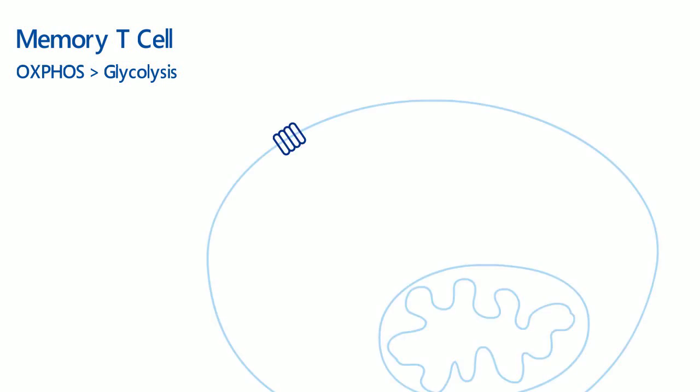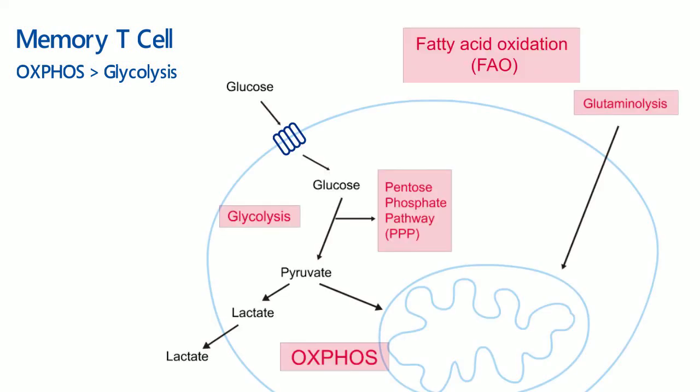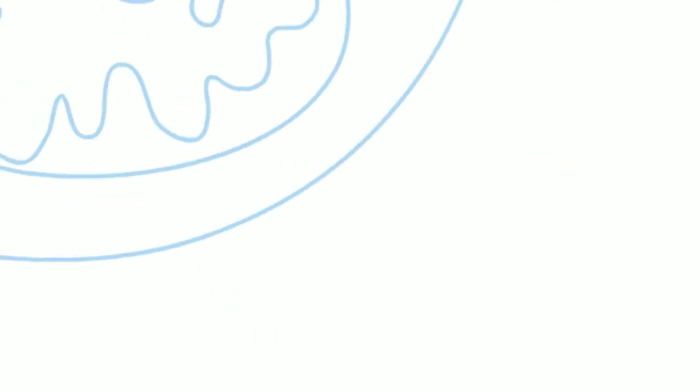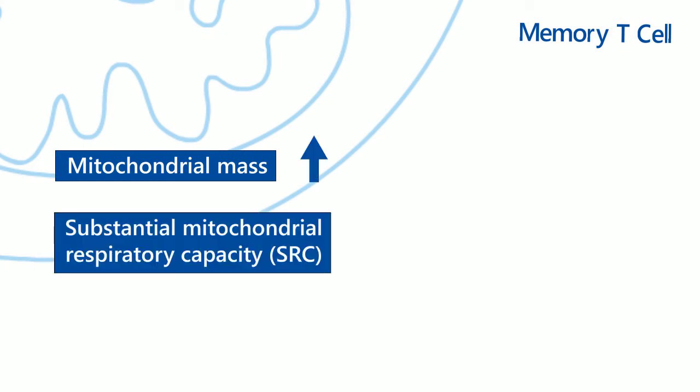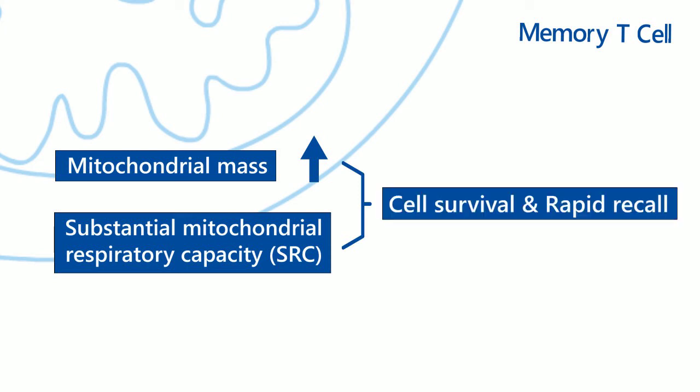Then, memory T-cells transition from aerobic glycolysis to oxidative phosphorylation, and also rely on fatty acid oxidation in mitochondria. They have increased mitochondrial mass and possess substantial mitochondrial respiratory capacity, enabling cell survival and rapid recall to antigen.